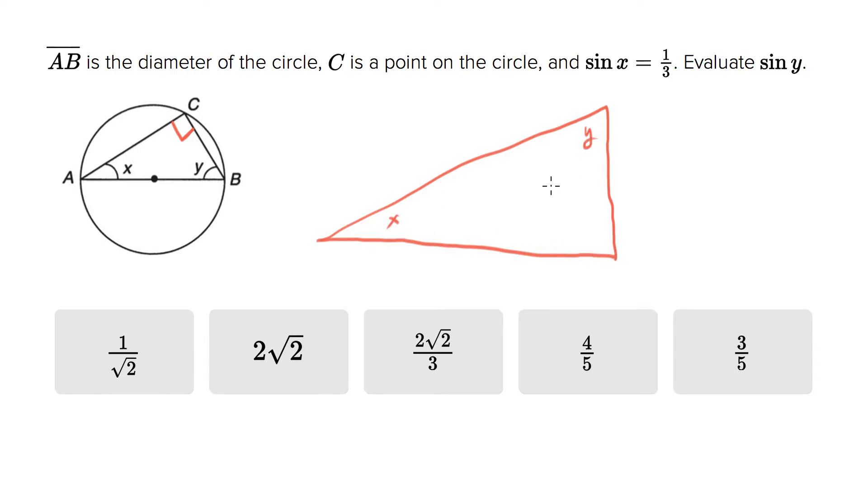They're saying sin x = 1/3. When they tell you the sine of an angle, they're giving you the ratio of the sides. We could use 1/3; I'm just going to say 1 and 3, which has the same ratio. What they're asking for is